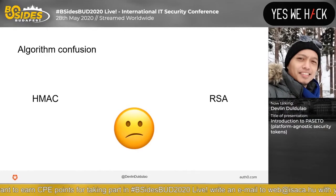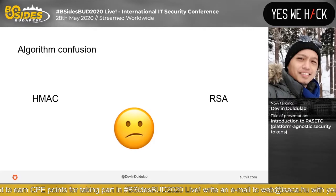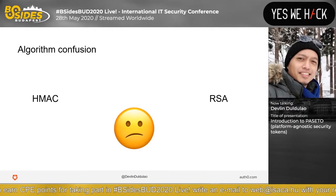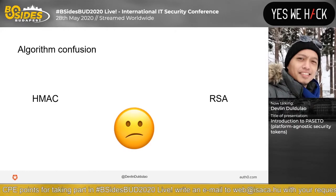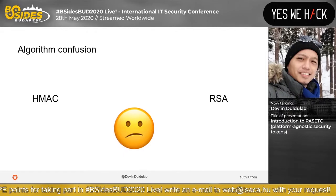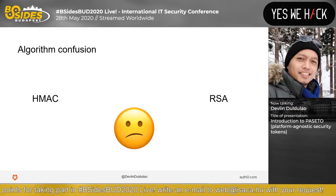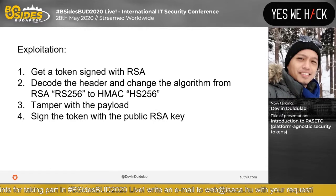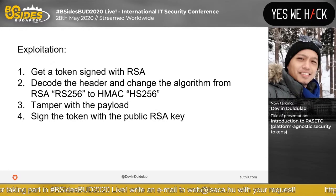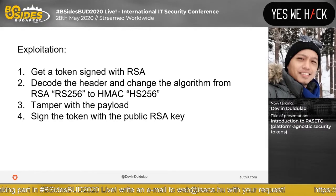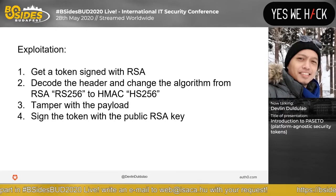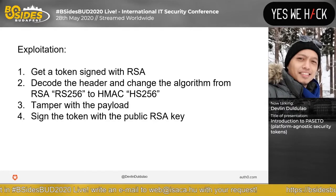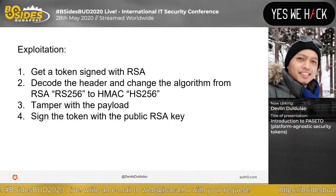Next is algorithm confusion — HMAC versus RSA. For instance, the token has been signed using HMAC instead of RSA, and you tell the receiver it's HMAC so it verifies with the public key thinking it's RSA. Exploitation: get a token signed with RSA, decode the header and change the algorithm from RSA to HMAC, tamper with the payload, and lastly sign the token with the public RSA key.